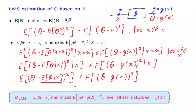So to summarize: the conditional expectation of theta, viewed as a random variable and as an estimator — what we call the LMS estimator of theta — has the property that it minimizes the mean squared error over all possible alternative estimators. So if you want to design this estimation box using some other function g, you're going to obtain a mean squared error that's no better than what you obtain if you use the conditional expectation.